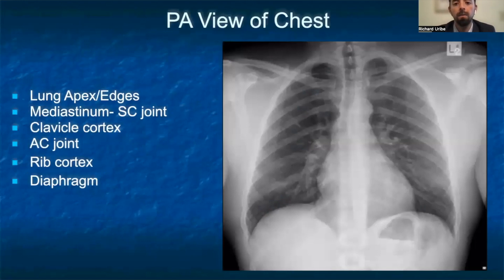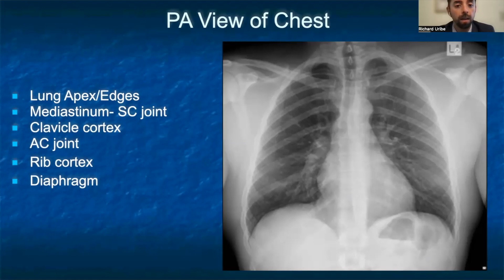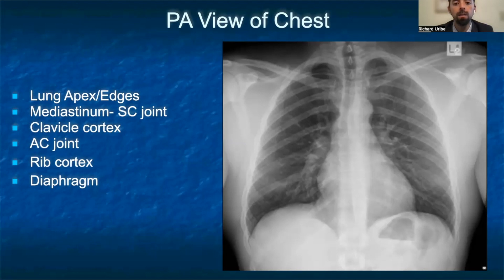When looking at the PA view of the chest, we need to start by focusing on the lung apices and edges to rule out pneumothoraces. From here, we will examine the mediastinum, specifically the sternoclavicular joint, and follow the edges of the clavicle laterally looking for cortical irregularities, buckling, or evidence of impaction. Evidence of soft tissue swelling or fat pad displacement would increase suspicion of a fracture. As we examine the lateral clavicle, we will examine the articulation with the acromion to form the acromioclavicular joint, making sure there's no displacement or separation.